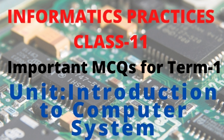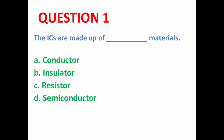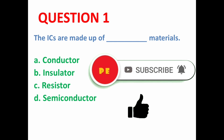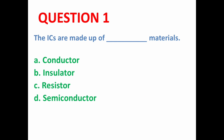Let's start with the first MCQ: ICs are made up of what material? ICs means Integrated Circuit — its full form can also be asked in the exam, so you should know that the full form of IC is Integrated Circuit. ICs are made up of semiconductor material, so option D is the correct option.